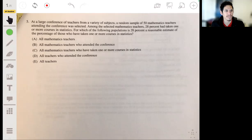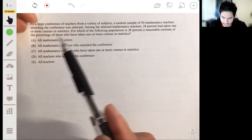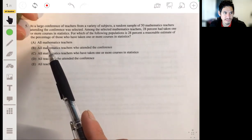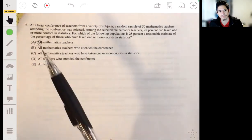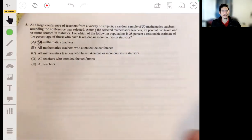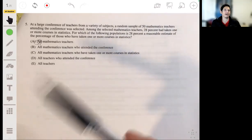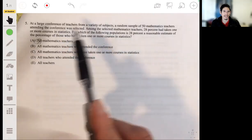For which of the following populations is 28% a reasonable estimate of the percentage of those who have taken one or more courses in statistics? Okay, so it's going to be all mathematics teachers. It's not going to be that because they say all mathematics teachers. There's literally mathematics teachers all over the world, and we can't just say they're all going to be alike this group.